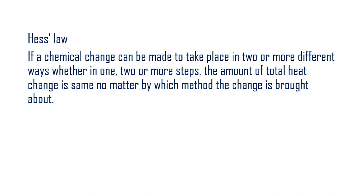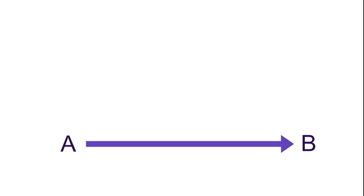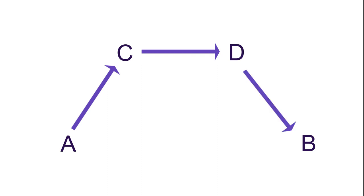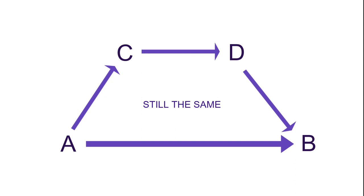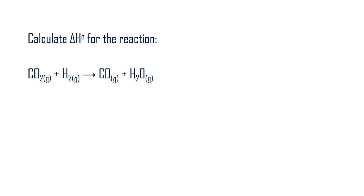Hess's Law states: if a chemical change can be made to take place in two or more different ways, whether in one step or more, the total heat change is the same no matter by which method the change is brought about. In simpler terms: if you want to go from point A to point B and you know a path from A to C, C to D, and D to B, you can follow that path and still reach B in the end.